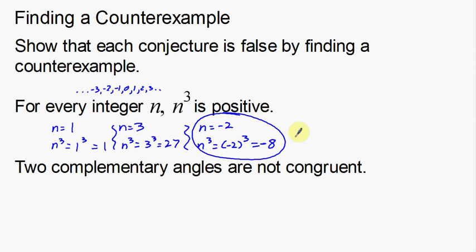Let's go on to the next example. The statement is: two complementary angles are not congruent. Complementary angles are two angles that add up to 90 degrees. So the statement claims that if you have two complementary angles — two angles that add up to 90 degrees — they are never going to be the same measure.